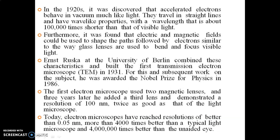Electrons travel in straight lines and have wave-like properties. The electrons' wavelength is about 100,000 times shorter compared to visible light. Resolving power of a microscope is inversely proportional to the wavelength. Electric and magnetic fields act on electrons in the same way as lenses act on light. The wavelength of visible light is about 100,000 times greater than that of accelerated electrons.